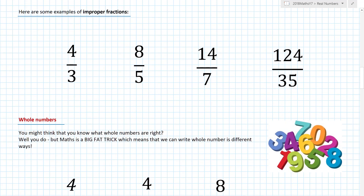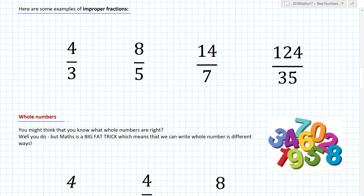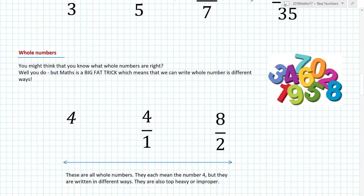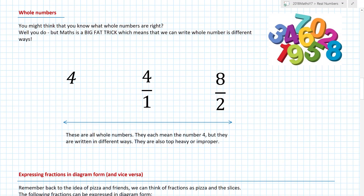Here are some great examples of improper fractions. What do we notice? The top number is always bigger than the bottom number. Why would these be useful? They come in handy later on when we start multiplying and dividing things. Now, whole numbers — maths is a big fact trick in that we can write whole numbers in lots of different ways.